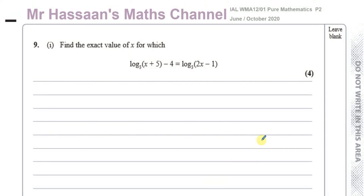Welcome back. This is now the final question from the Paper 2 Pure Mathematics P2 paper from the International A-Level Edexcel October 2020 session. This question is about logarithms. It says: find the exact value of x for which log to the base 3 of (x + 5) minus 4 equals log to the base 3 of (2x - 1).